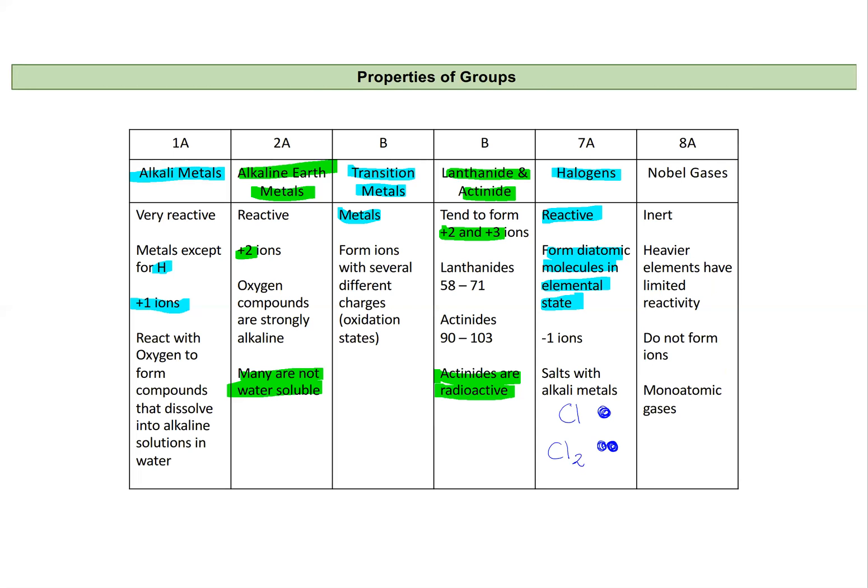Our noble gases are inert. They do not react with other elements for the most part, unless they're very heavy, like xenon. Xenon can form bonds with other molecules or other elements. So it doesn't form ions either, and these are all monoatomic gases, meaning that a xenon gas will just be one atom rather than the diatomic like we saw with chlorine.